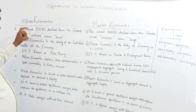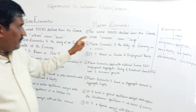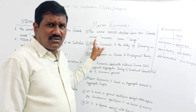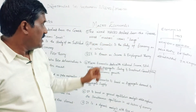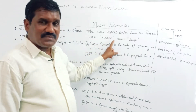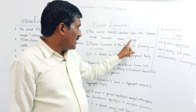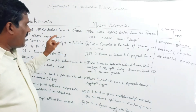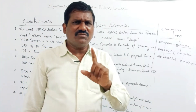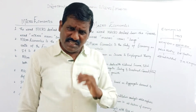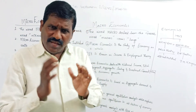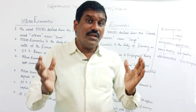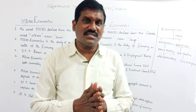Mikros means 'small.' So microeconomics deals with what is small. The word 'macro' is also derived from a Greek word, namely 'makros.' Makros means 'large.' So, micro means small, which refers to an individual unit. The study about an individual unit is called microeconomics, and the study about all individual units is macroeconomics.